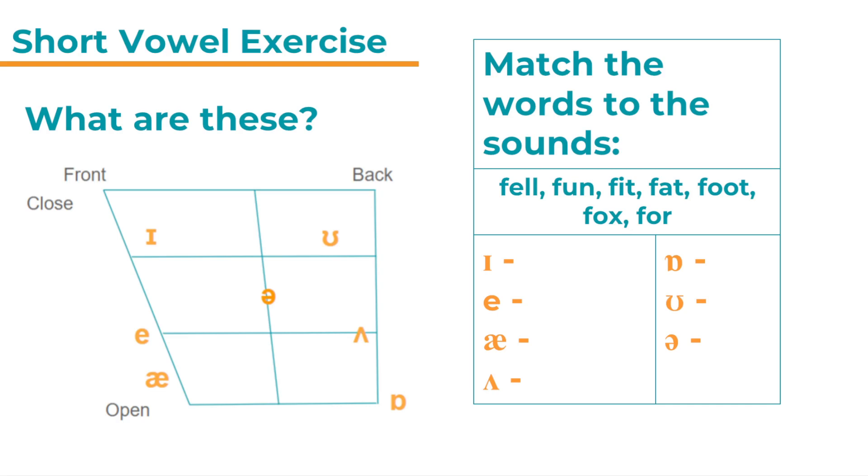Fell. Which one is the correct vowel sound and vowel sound symbol? Have a quick look. Fell. Exactly. It's e. Fell. You can see the red star will show you where the sound is on the vowel chart.